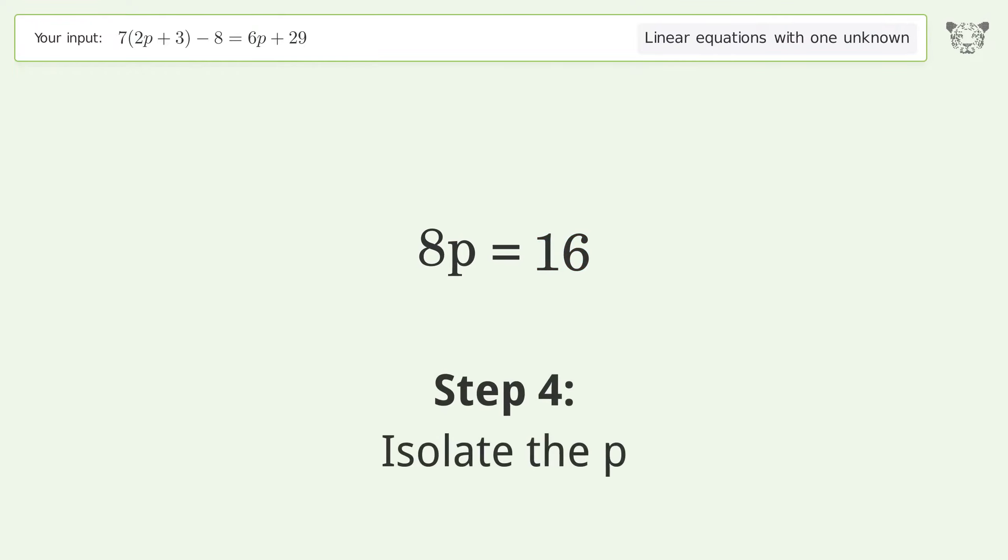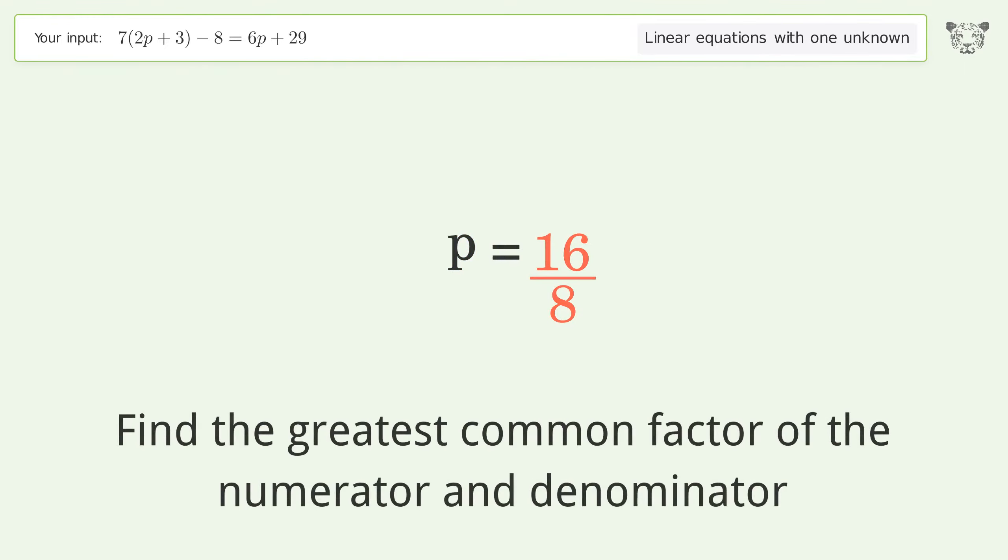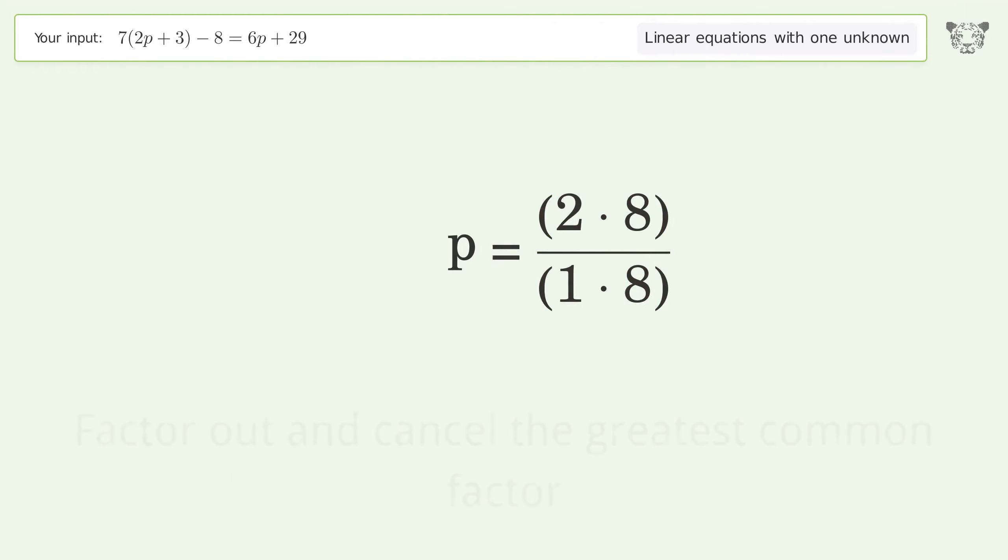Isolate the p. Divide both sides by 8. Simplify the fraction. Find the greatest common factor of the numerator and denominator, then factor out and cancel the greatest common factor.